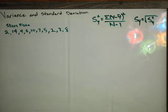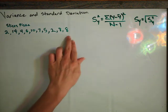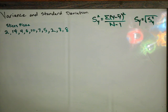This video will walk through how to find the variance and standard deviation when you have a list of raw scores instead of a frequency table.